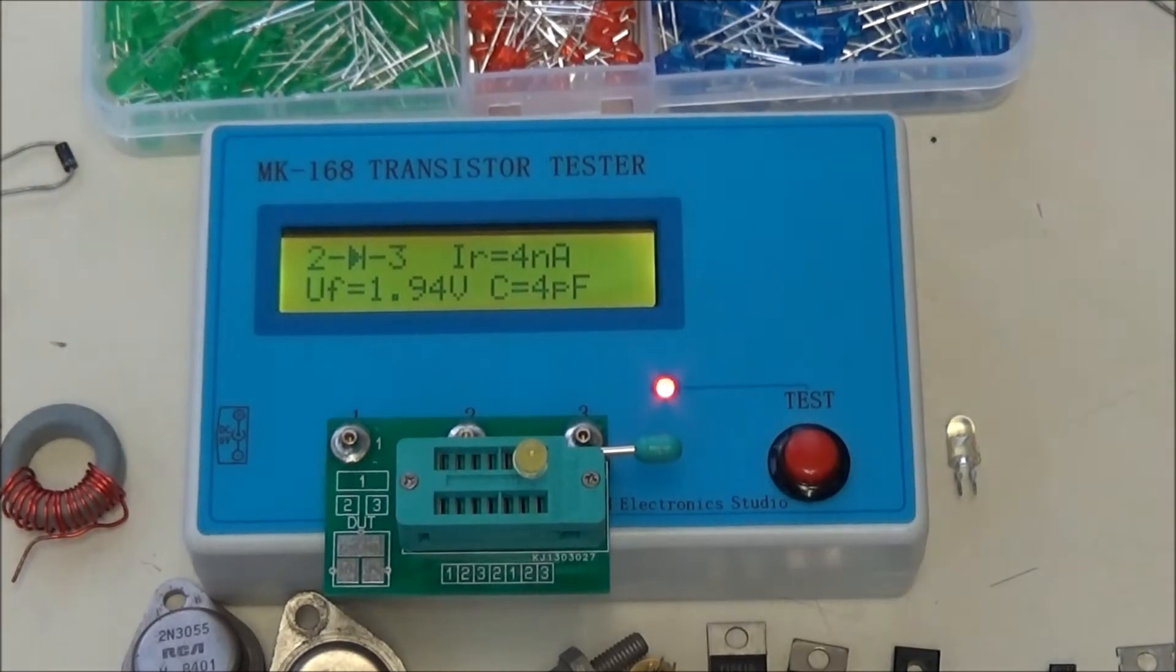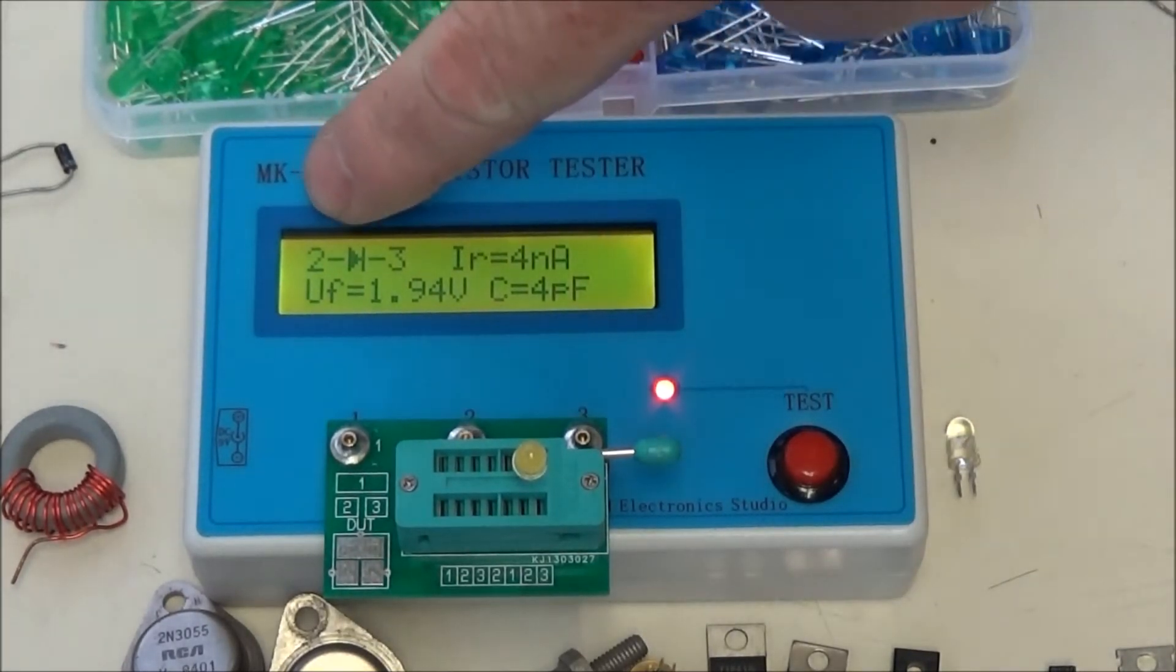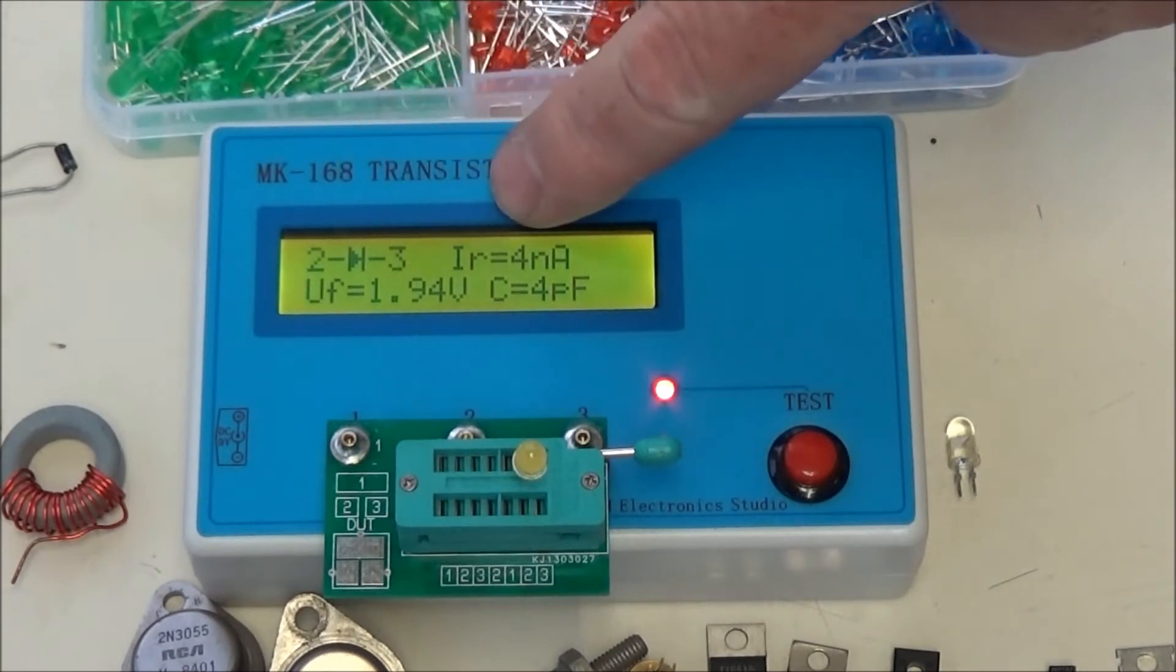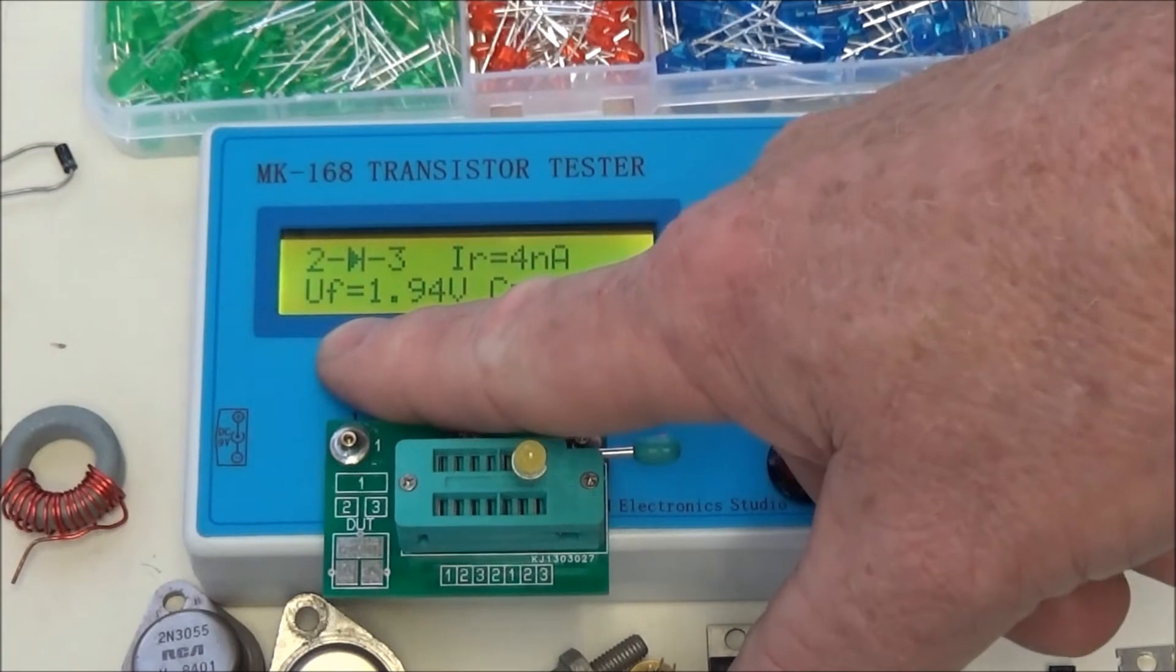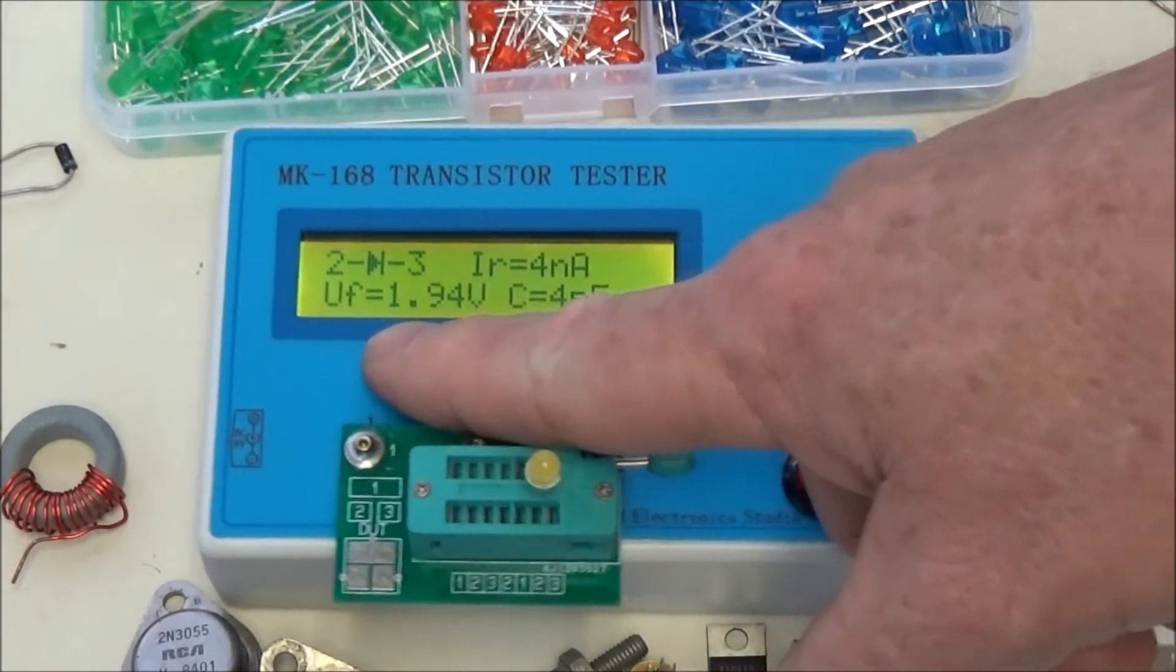Let's look at what we got here. This identifies the anode and the cathode. Diodes usually have a little bit of leakage current in the reverse mode. In this case, it's 4 nanoamps. That's fine. They call this UF, but that's forward operating voltage.